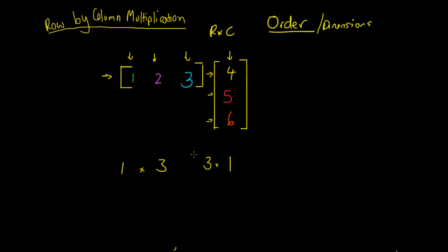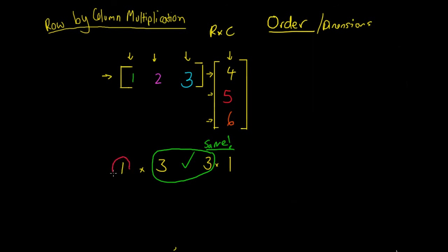What's really important when multiplying matrices together is we can only multiply them providing these two middle numbers — the three and the three — are the same. If they're not the same, we cannot multiply our matrices together. Here we've got one, two, three columns and one, two, three rows, so three and three are the same. We can give it a tick and go forward. When those inner numbers match, the resulting matrix will have dimensions of the outer numbers — in this case, one by one.